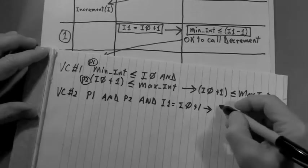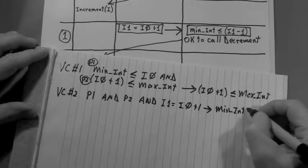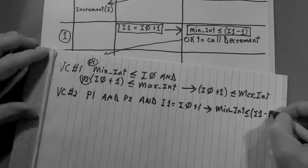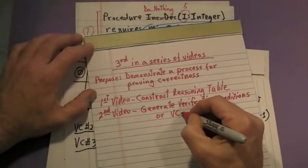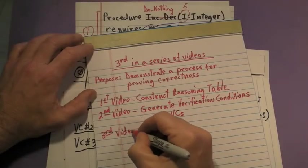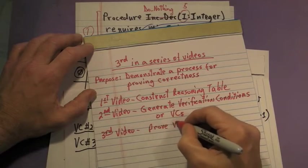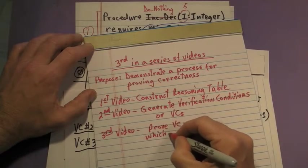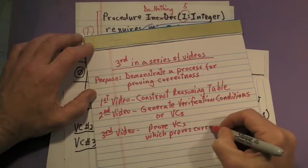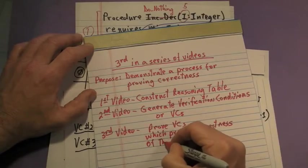There were three verification conditions, one for state 1, one for state 2, and one for state 3. In this third video, we're going to show you how to prove each of those three VCs from the second video, which will then prove the overall correctness of the do nothing operation.